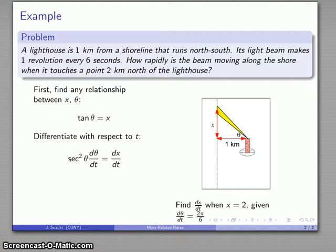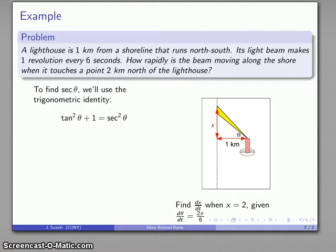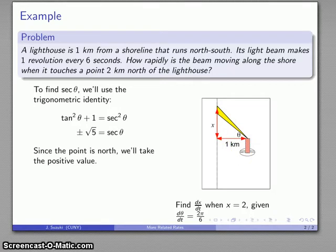Maybe a little bit more complicated, but not too terribly difficult, because I can use the other trigonometric identity, tan²θ + 1 = sec²θ. I know the tangent of theta is two, because I want x to be two, so at the theta I'm interested in, opposite is two, adjacent is one, so tangent is two, and that tells me secant is going to be plus or minus root five. Since the point is to the north, I'm going to take the positive value.